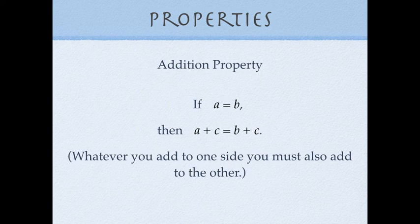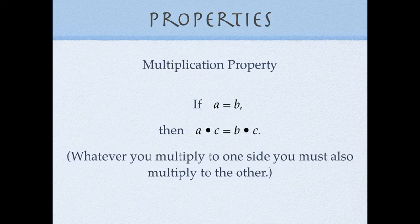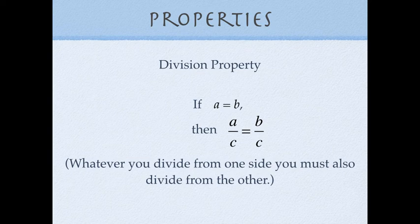So we have four properties we know quite well. Whatever you add to one side you must also add to the other: if a equals b, then adding c to both sides doesn't change the balance of the equation. Similarly, the subtraction property says a minus c equals b minus c. The multiplication property says a times c equals b times c when we start with a equaling b. Finally, the division property of equality: whatever you divide from one side you must also divide from the other.